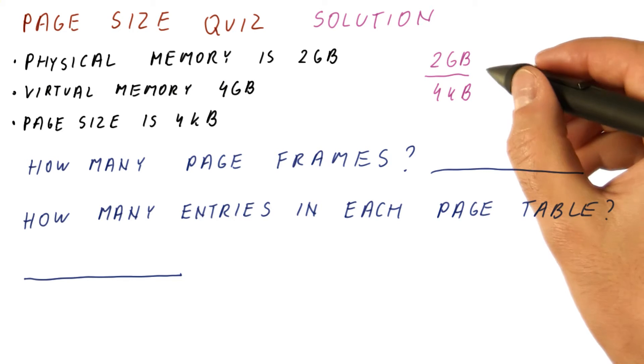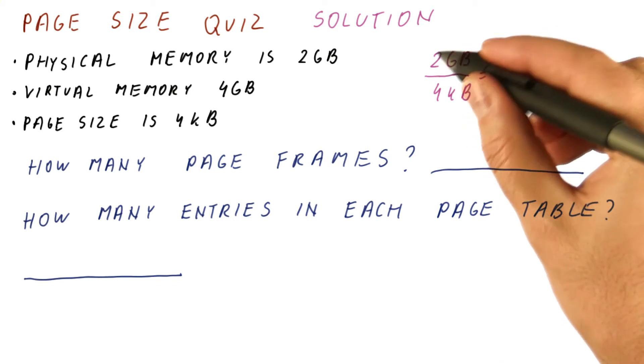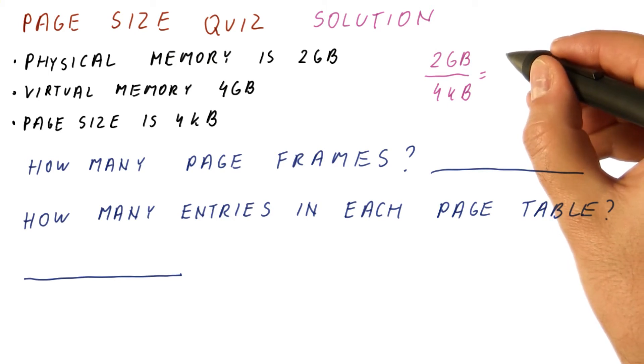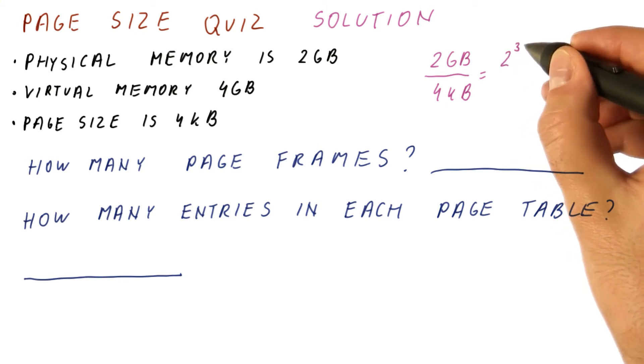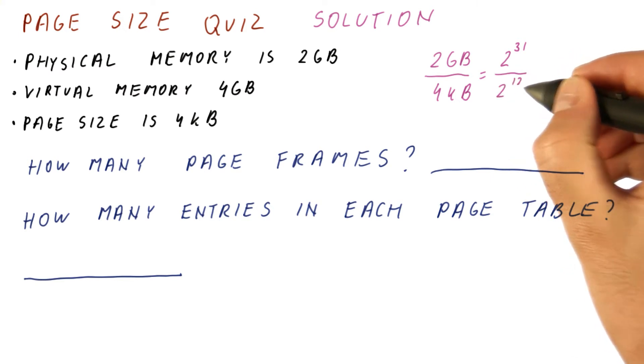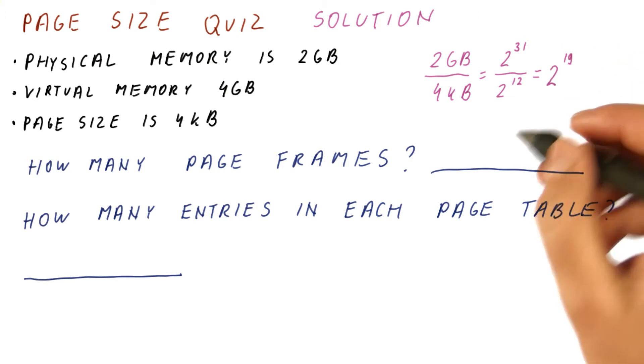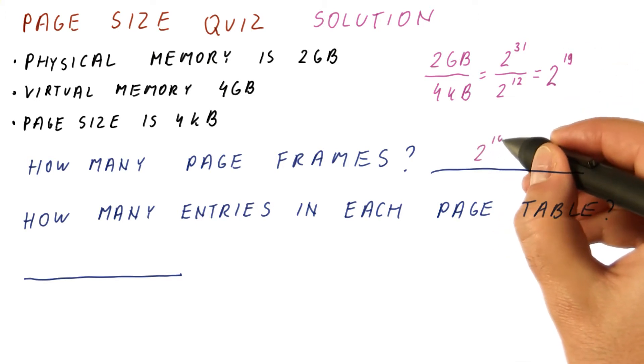When we are doing things like this, usually it's a lot easier to think about this as what power of two is it. So two gigabytes is two to the 31st bytes. Four kilobytes is two to the 12th bytes. So we end up with two to the 19th frames. So the answer here is two to the 19th.